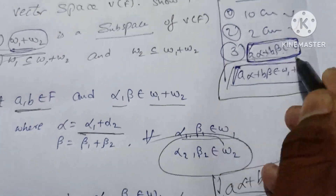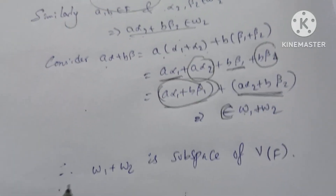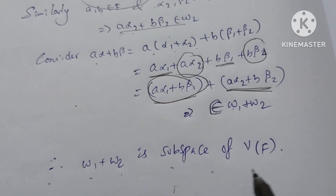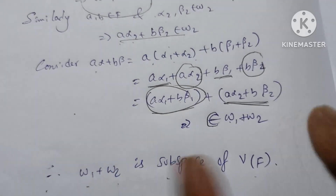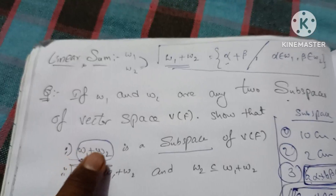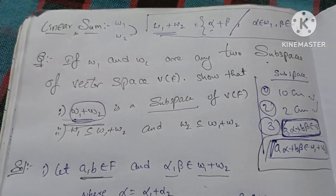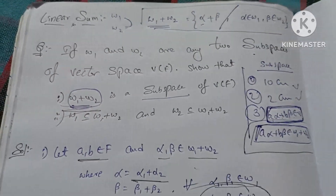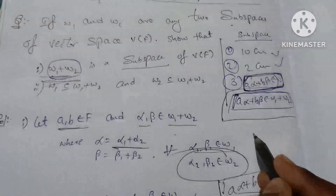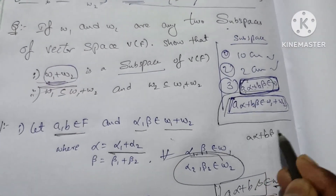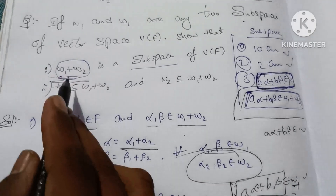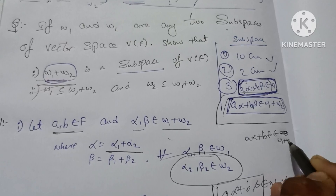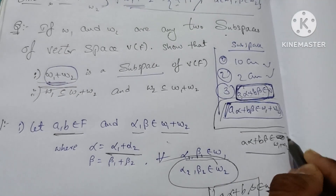Therefore, W1 plus W2 is a subspace of the vector space. It is easy to show that W1 plus W2 is a subspace of the vector space.